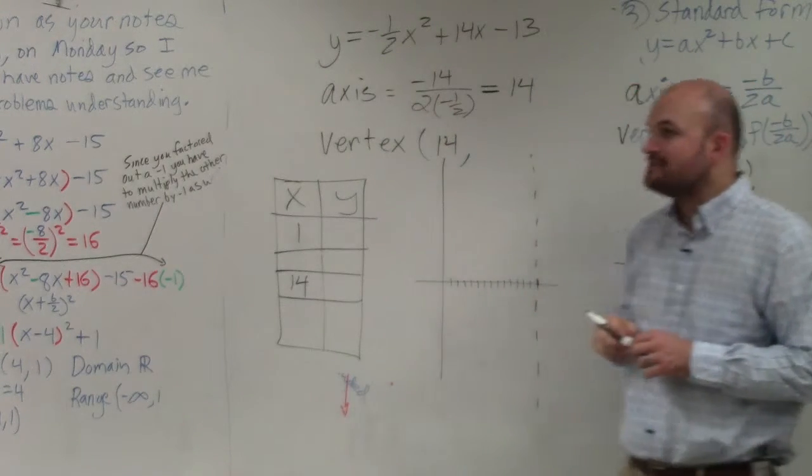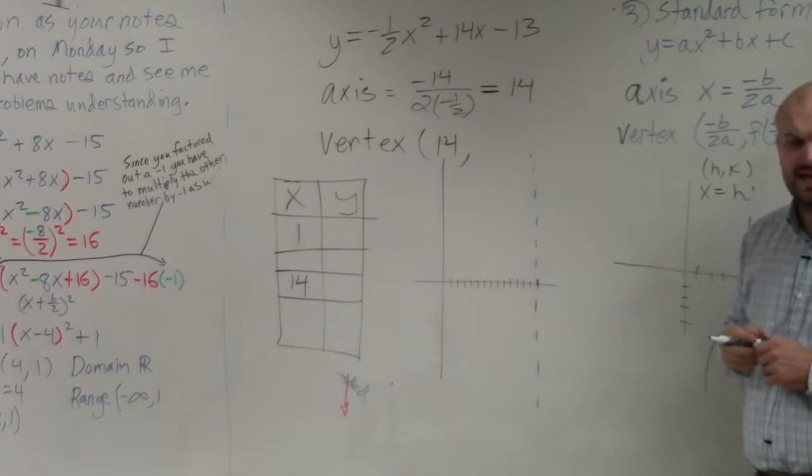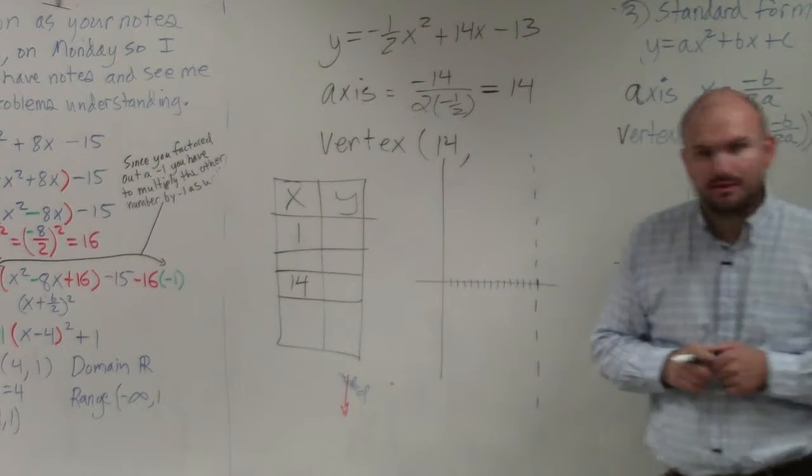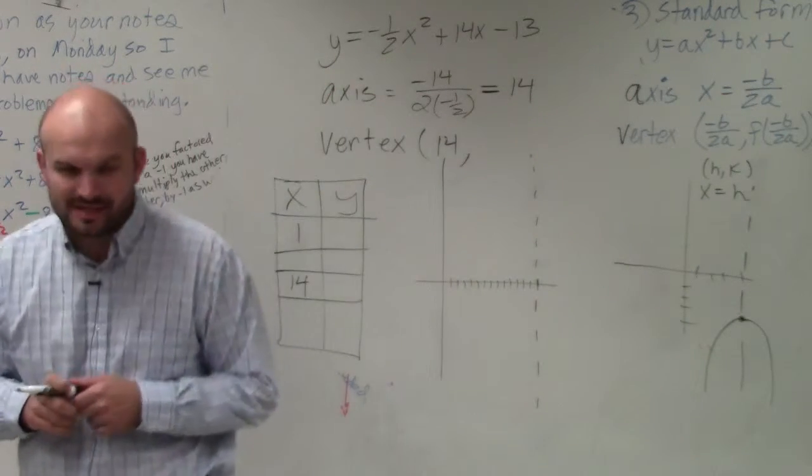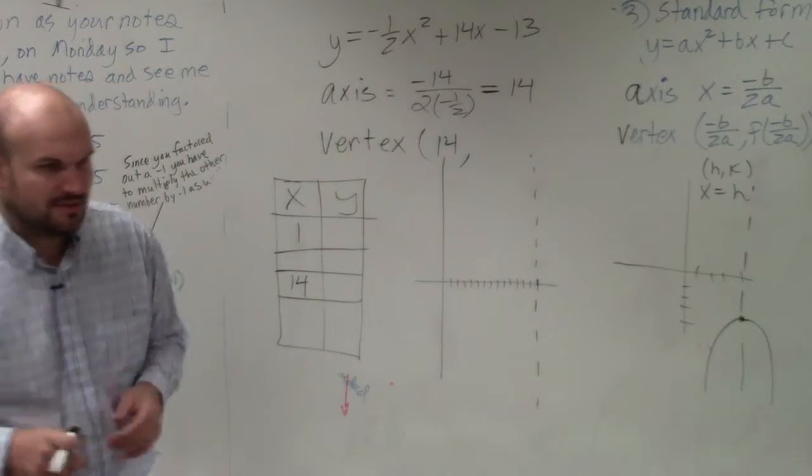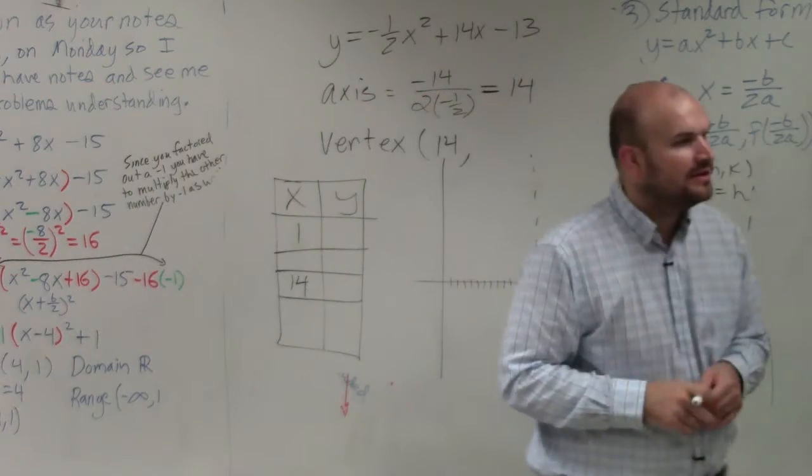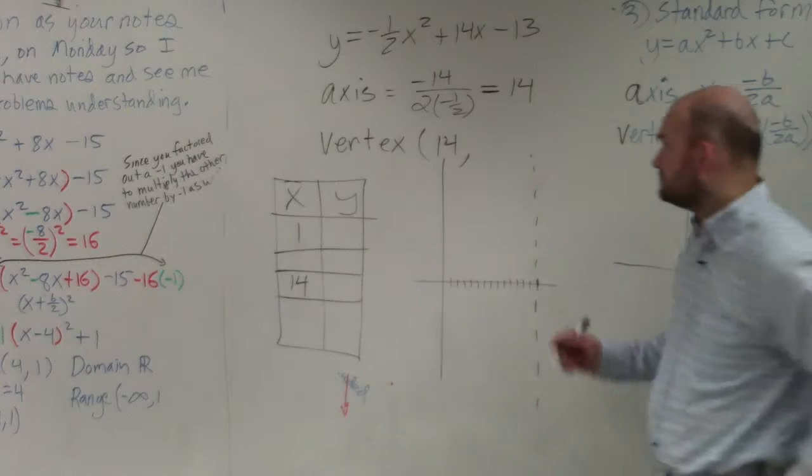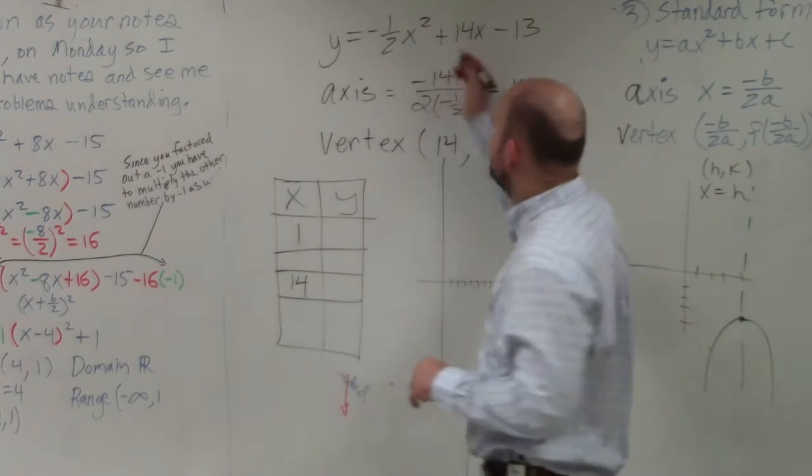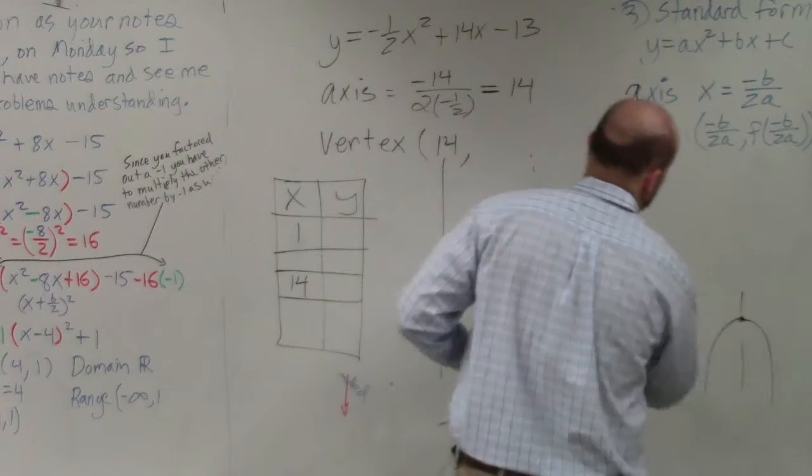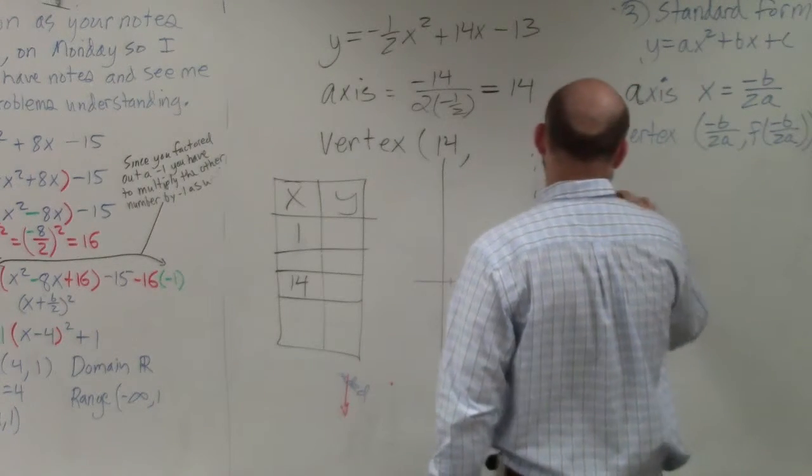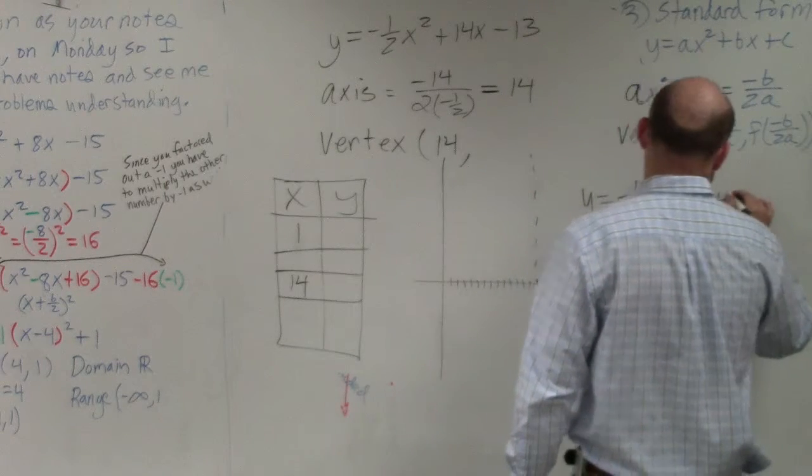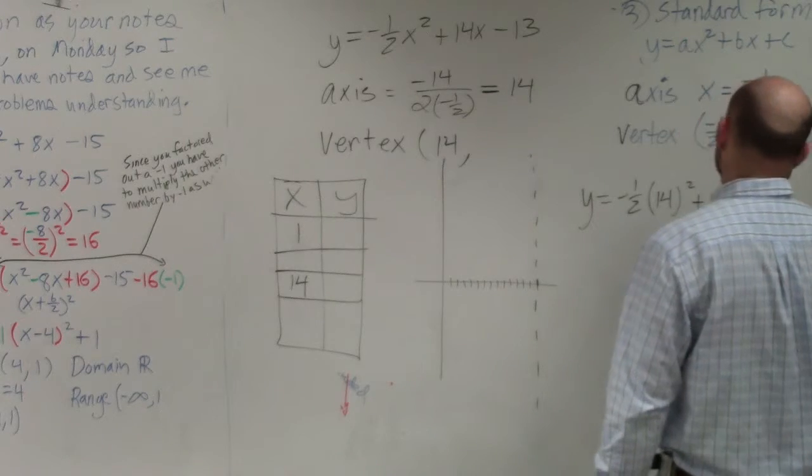So I have 14 times 14 is going to be 196, I believe. Yes? Anybody have a calculator? I believe 14 times 14 is 196 and times it by negative 1 half. Oh, you guys are making me do a lot of math. It would be 98, negative 98? Yeah, 14 times 14 is 1. Okay. So if I multiply, so basically, let's erase this here.